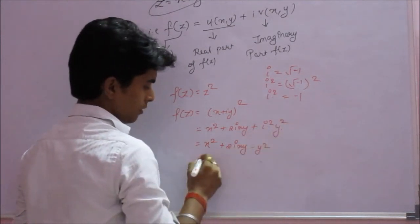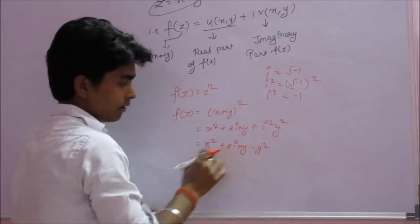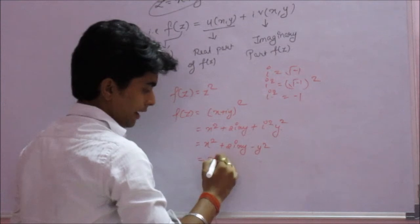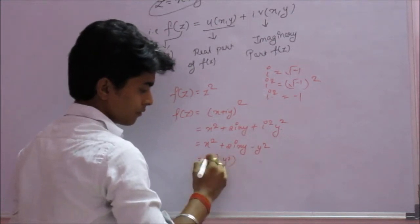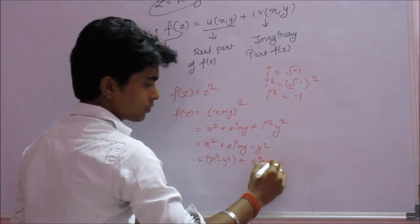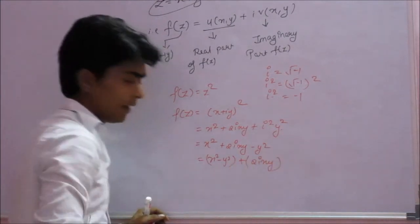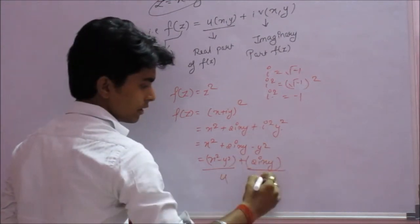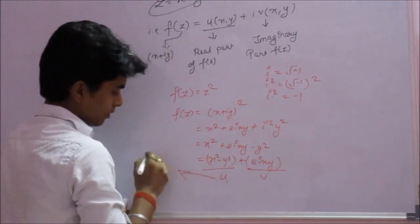Taking the real part and imaginary part, that means x squared minus y squared plus 2ixy. Hence this is our u and this is v.